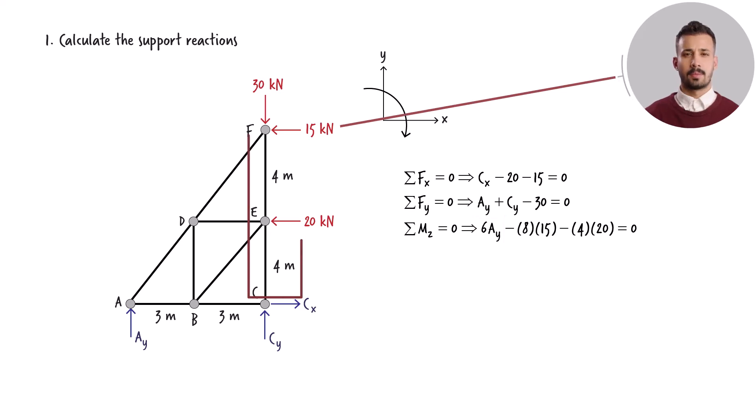This force has a moment arm of 8 meters. Since the force creates a counterclockwise moment at C, we get negative 8 times 15 here. And this force, having a moment arm of 4 meters, causes a counterclockwise moment of 4 times 20. The line of action of the 30-kilonewton force passes through point C, therefore its moment at C is zero.